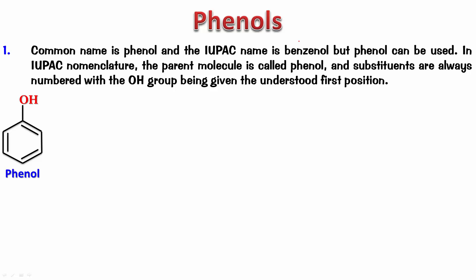Now what would be the name of this one? It's a phenol derivative. Pause the video, name it, and play it back to check. We number it: the carbon containing the OH gets position 1, then 2, 3, 4, and Cl is the substituent — so it's 4-chlorophenol.